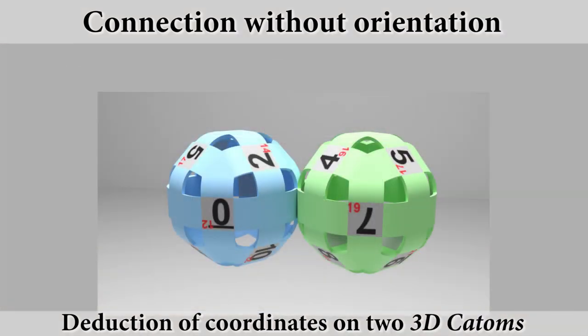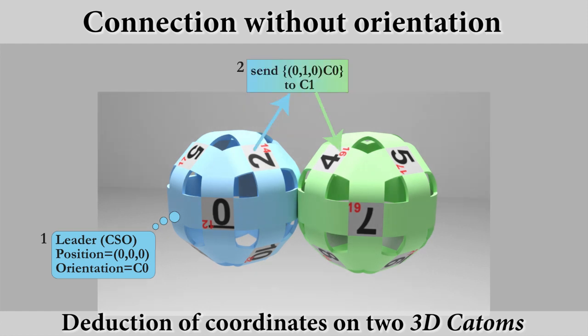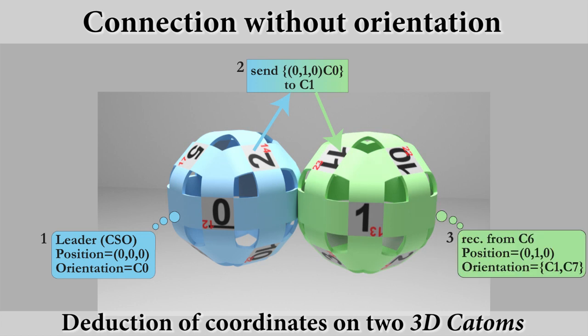The 3D catomes are triakisoctahedral robots with 12 connectors. A connected robot may have two different orientations at a connector. We define the orientation of a 3D catom by the name of the connector where the x-axis passes through. Here, the orientation of the green module may be 7 or 1.